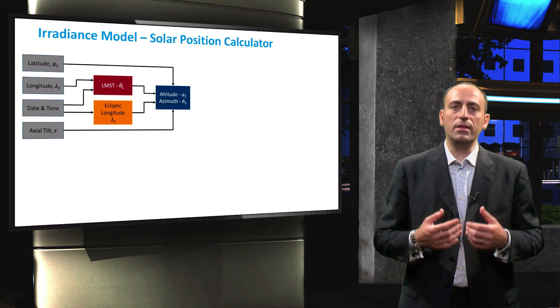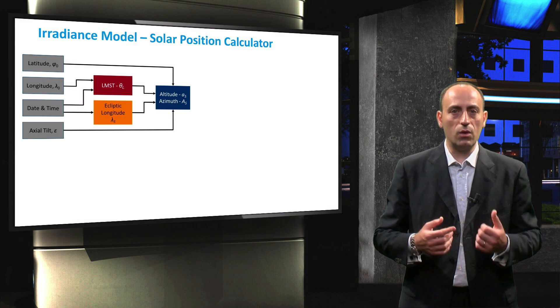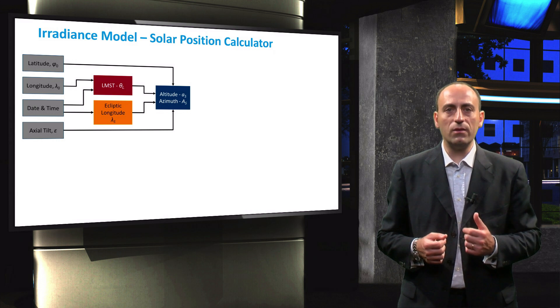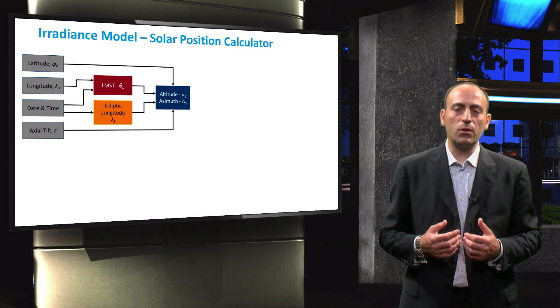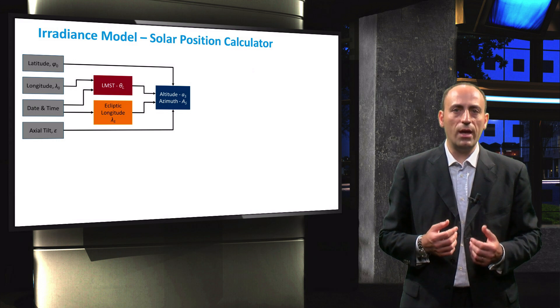We will first look at the irradiance model. As you might recall, the irradiance model consists of the solar position calculator and the optimizer model. The solar position calculator is used to determine the position of the sun in the sky for a certain location at fixed time intervals over a certain period of time. The time interval is an important parameter in the design process. With shorter time intervals, the accuracy of your system design is improved while your simulation time is increased. For large time intervals, the reverse effect is observed.